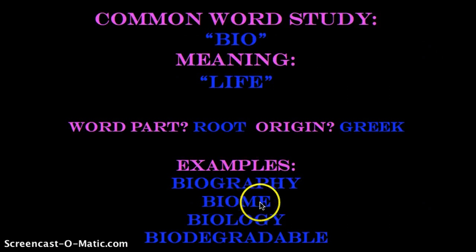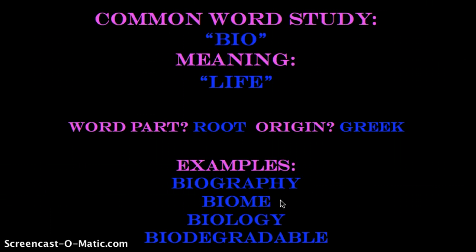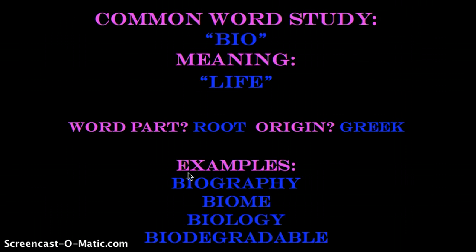The second word is biome. Back in fifth grade you might have studied the different biomes of the earth. A biome is an area that shares similar climate, similar animal life, and similar plant life — such as the rainforest biome, the grassland biome, the tundra biome, and the desert biome. When you're looking at a biome, you're studying the different kinds of life forms found in a specific region of the world. Thus, the word biome refers to the life within a certain area.